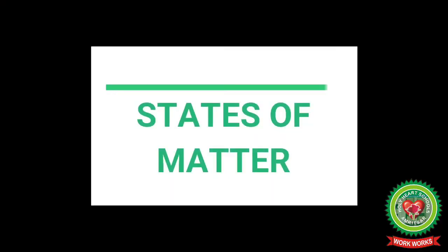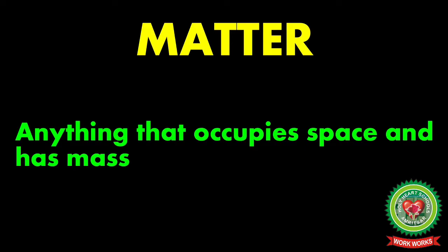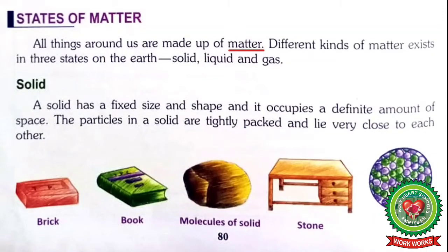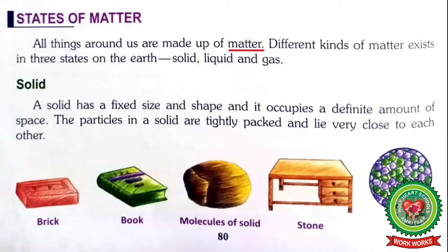Let's start reading from the topic: States of Matter. All things around us are made up of matter. Underline the word 'matter' and write down its definition: matter is anything that occupies space and has mass. Different kinds of matter exist in three states on the earth — solid, liquid, and gas.